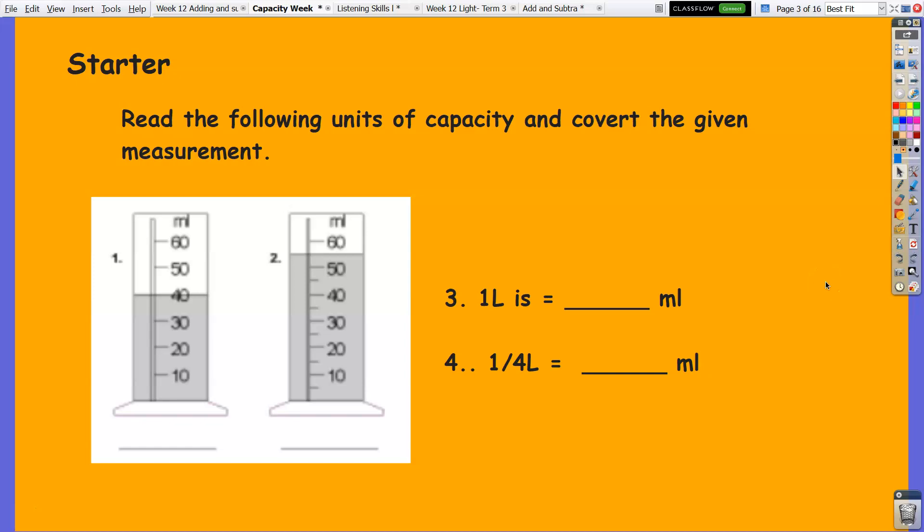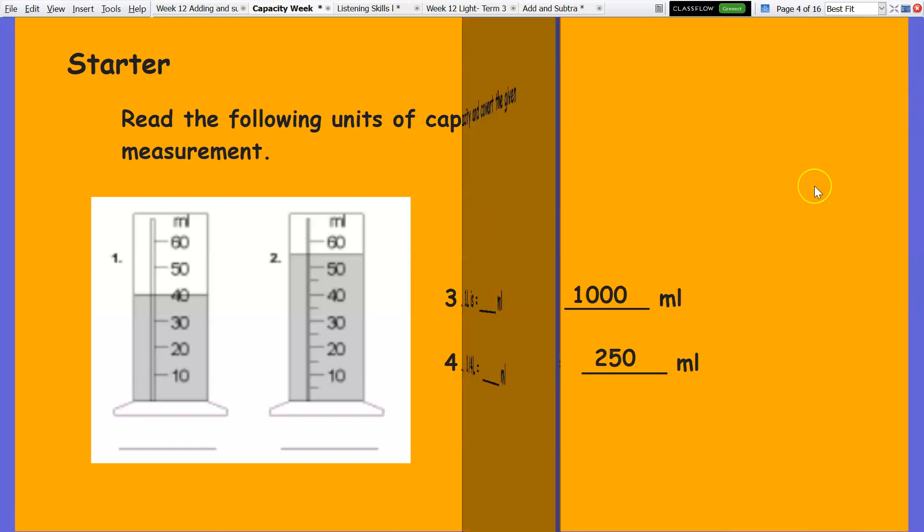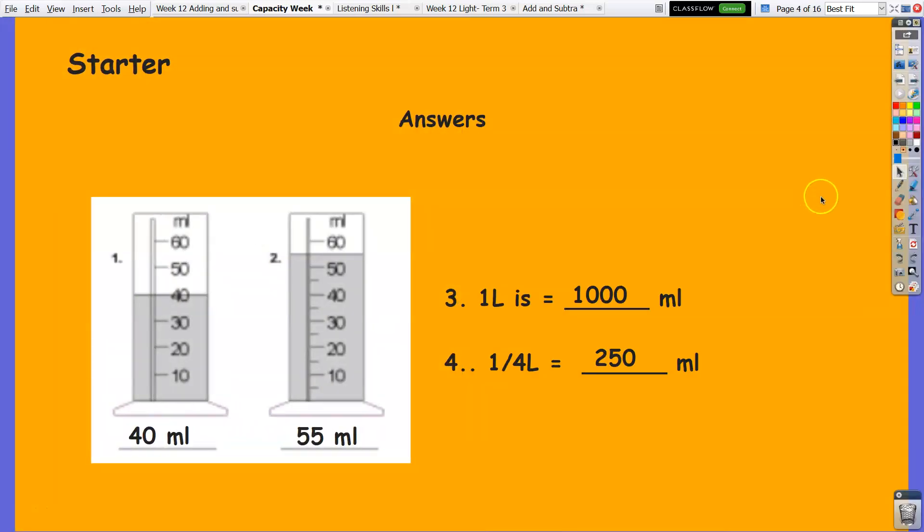Pause the video and write your answers. Time is up. Here are the answers: for number one we have 40 ml, number two we have 55 ml, for number three, one liter is 1000 ml, for number four, one fourth liter is 250 ml.